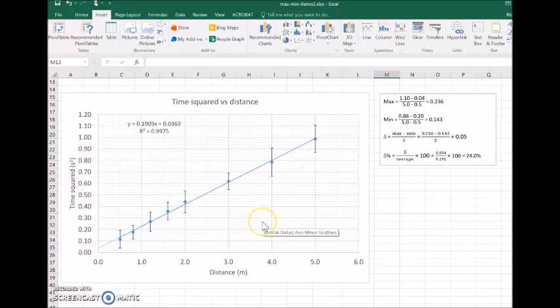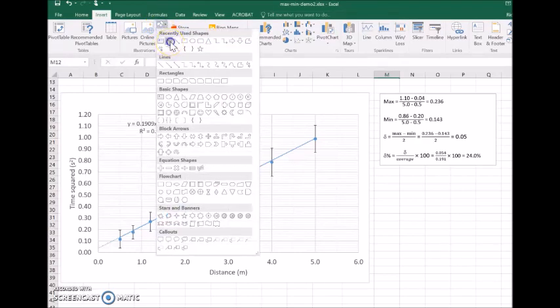In this video I just want to show you how to work out maximum and minimum lines of best fit. Now there are programs around that can do this using Excel, but for this one I want to do it manually. So I'm just going to add a line of maximum gradient.